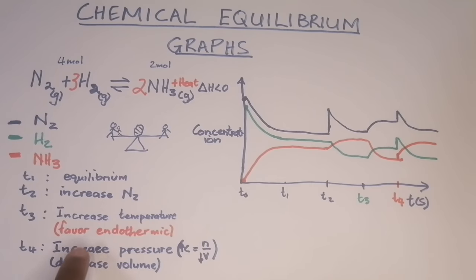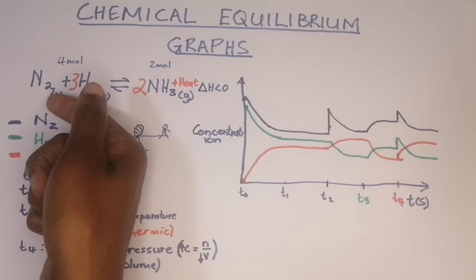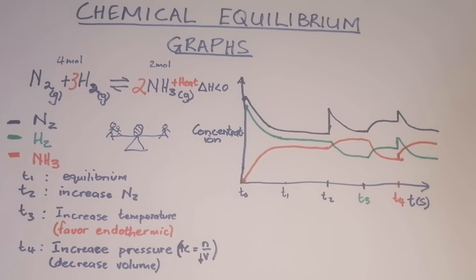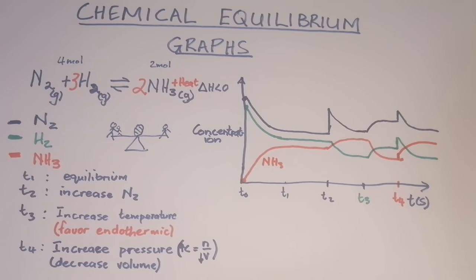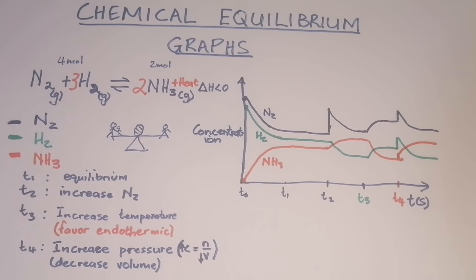To summarize: on a concentration graph, a sharp increase in only one substance means that substance was added. An increase in temperature favors the endothermic reaction; a decrease favors the exothermic. Increasing pressure shifts equilibrium to the side with fewer gas moles. This is how you interpret a concentration graph on chemical equilibrium. Next time I'll do the rate-of-reaction graph. Please subscribe and I'll see you next time.